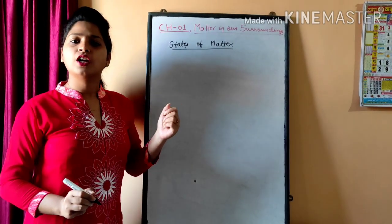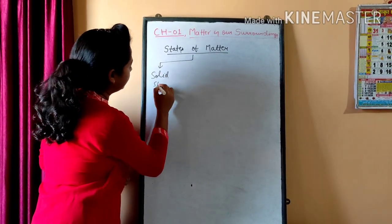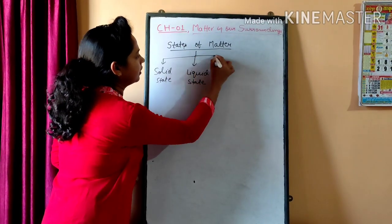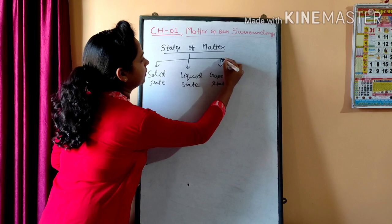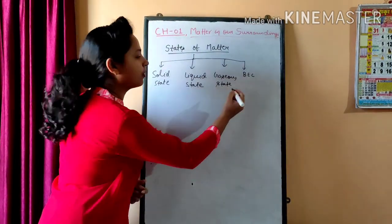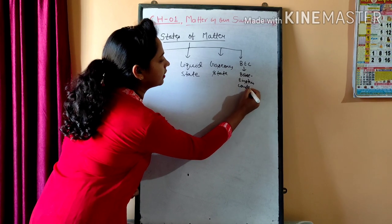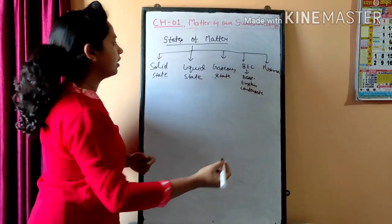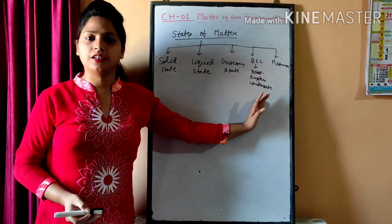States of matter. So there are five states of matter. First is solid state. Second is liquid state. Third is gaseous state. Fourth is B.E.C. — B.E.C. stands for Bose-Einstein condensate. And the last one is plasma. So these are the five states of matter — matter is classified into basically these five categories.